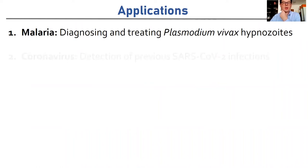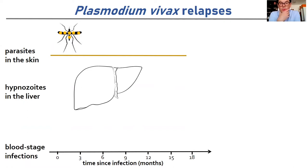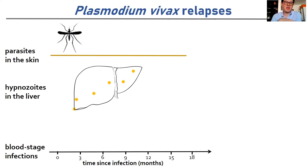The species of malaria that we work with the most is plasmodium vivax, which is interesting because of its relapsing nature. Infection begins with a bite from a mosquito, which inoculates parasites into the skin. These then travel to the liver, and some undergo development immediately to give rise to an initial blood stage infection. This is the paradigm for falciparum malaria, the species most common in Africa: one mosquito bite, one blood stage infection.